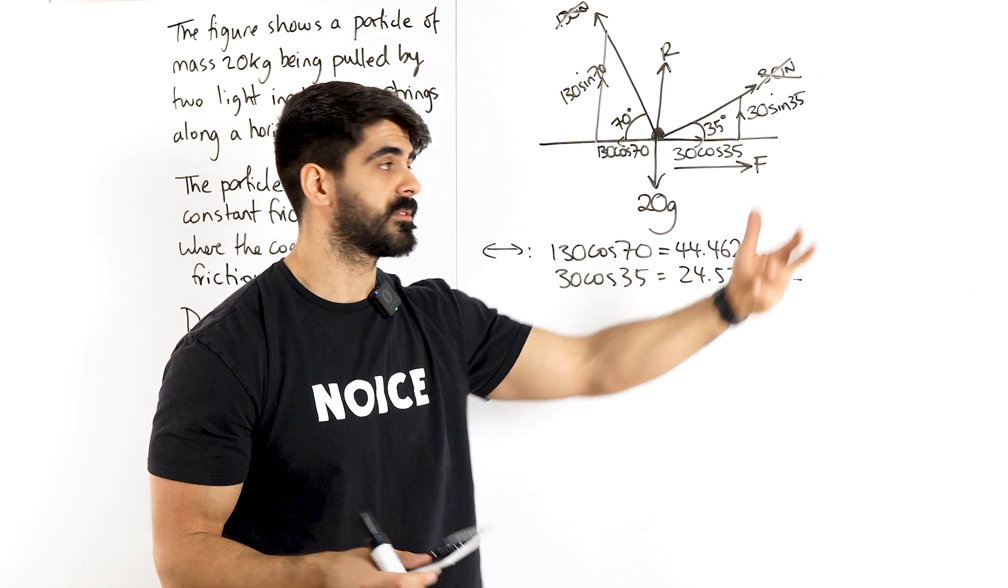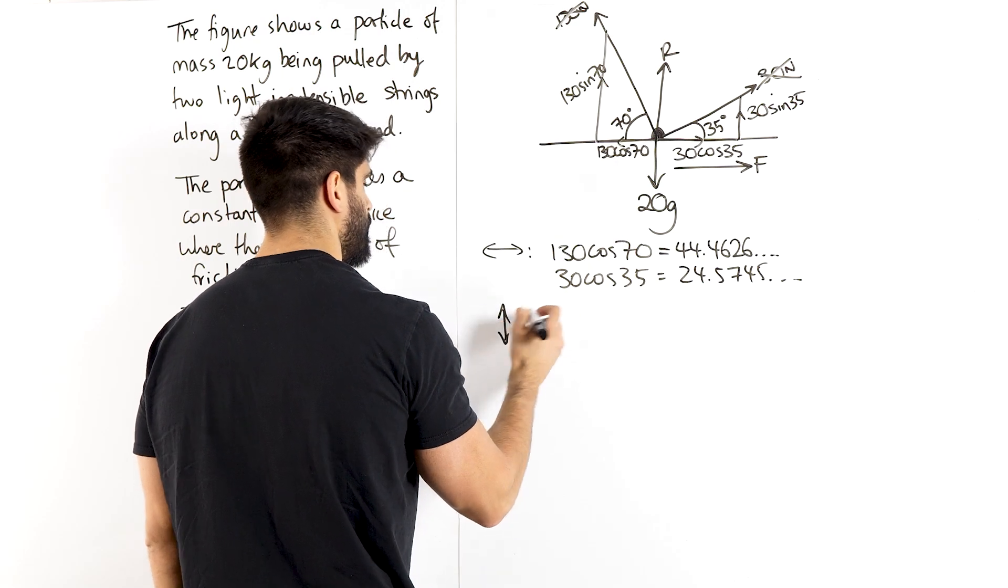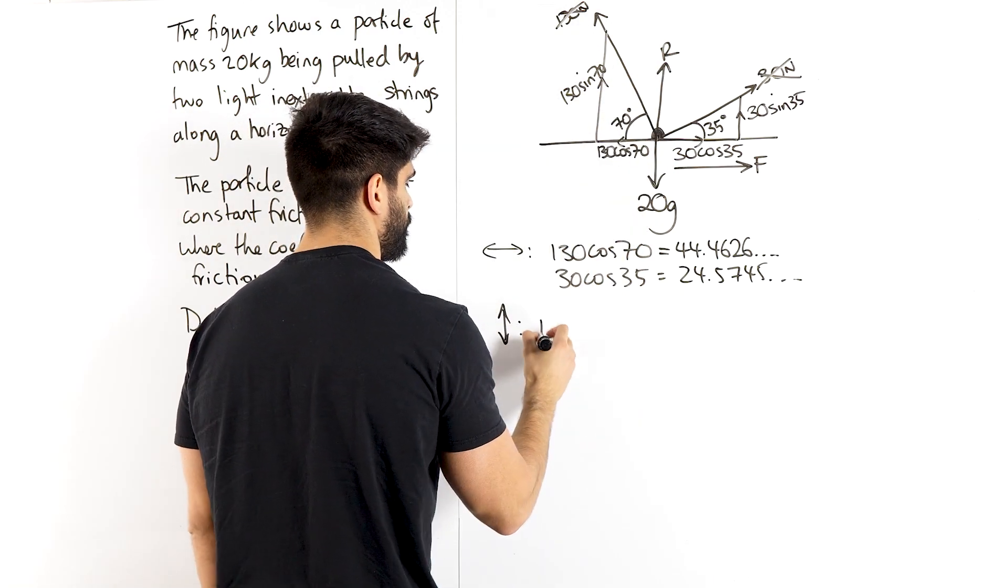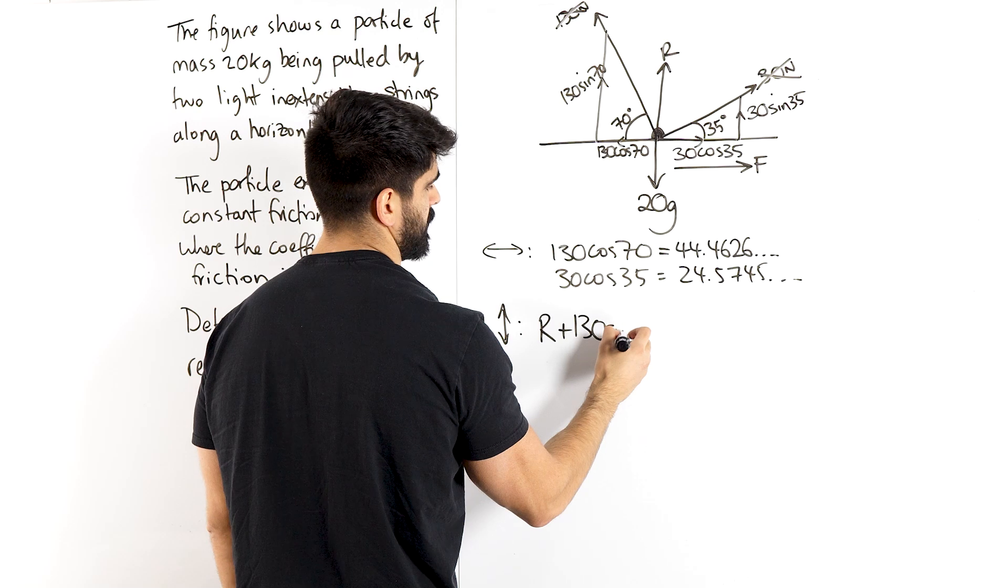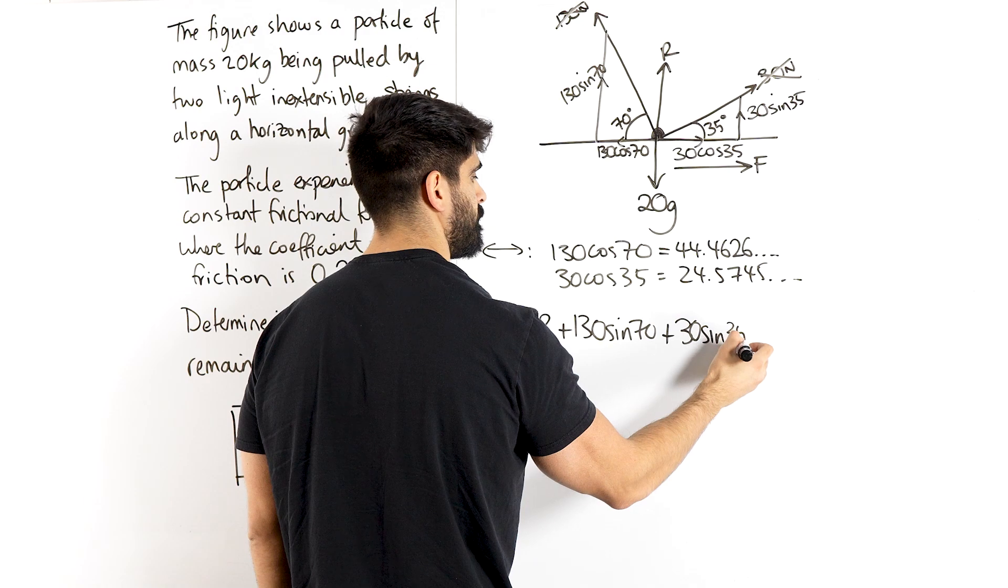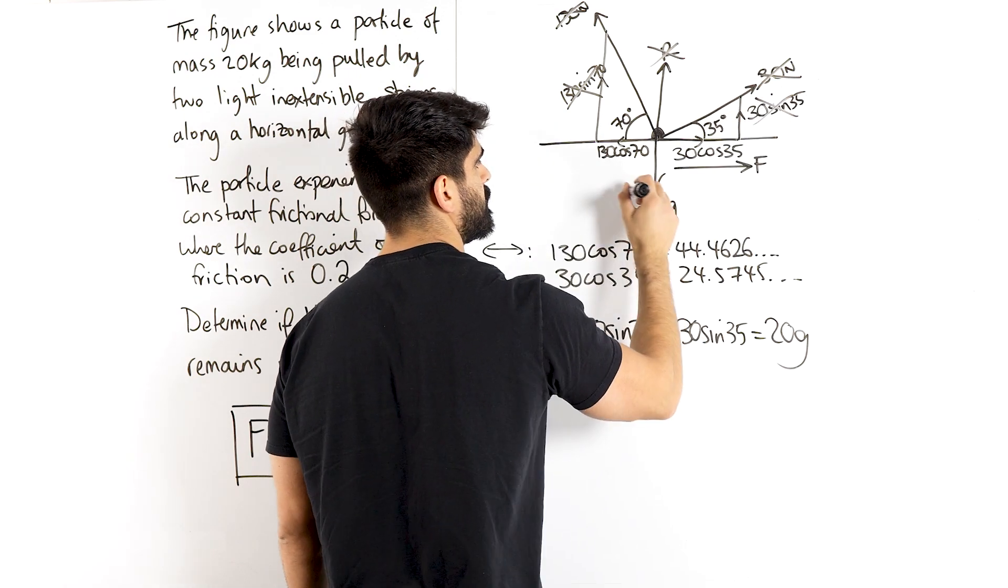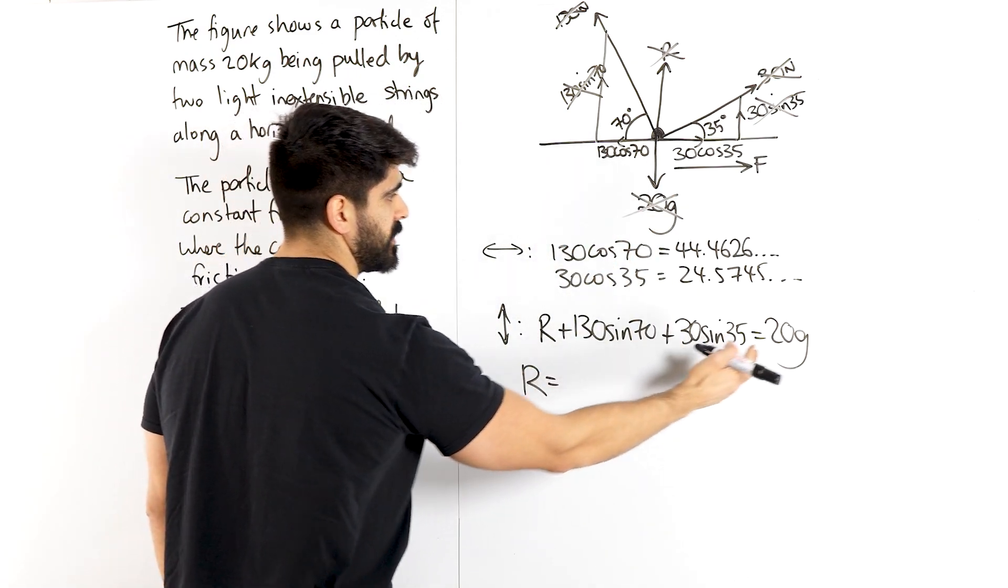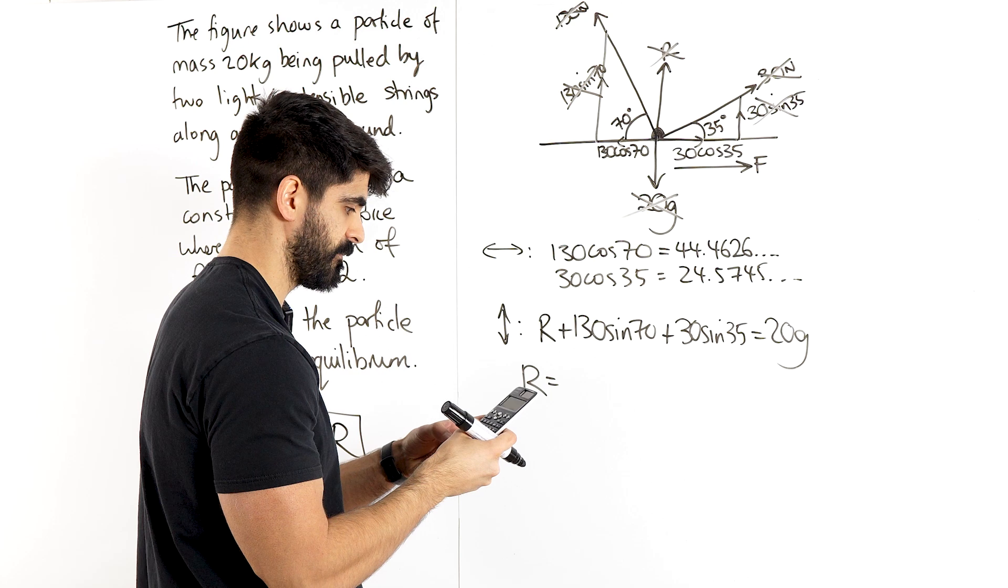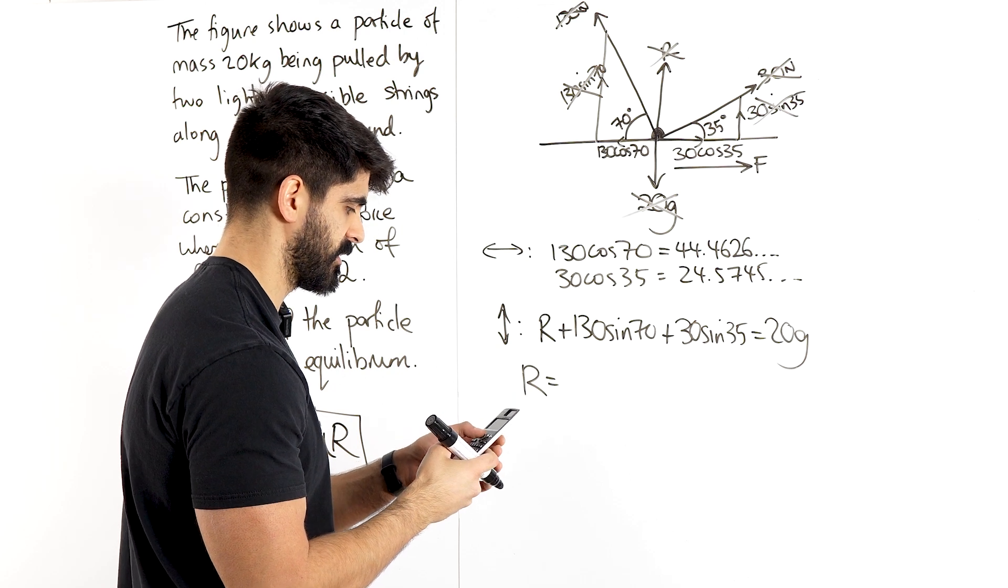Now we're only going to write F because now we need to calculate if F is large enough to counterbalance the difference. And for that we're going to calculate F max. Now we know F max is mu R. So for this we're going to have to calculate R now. Now for sure it's an equilibrium up and down, otherwise it would be bouncing off the ground. So we have R and 130 sin 70 and 30 sin 35 equals 20 G. So up plus up plus up equals down. So R is going to be 20 G, which is 20 times 9.8 minus the other two. So 20 times 9.8 minus 130 sin 70 minus 30 sin 35. 56.63.